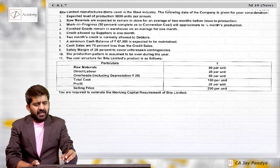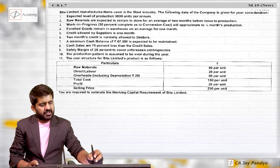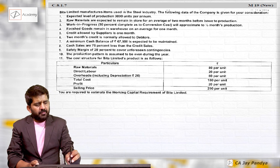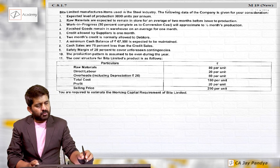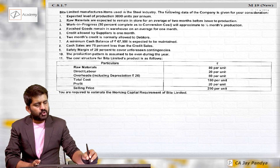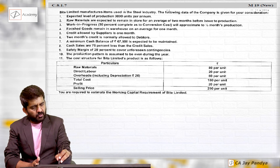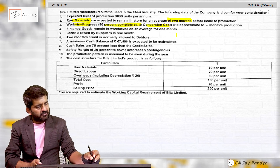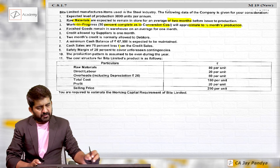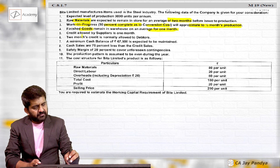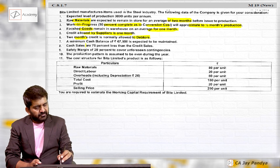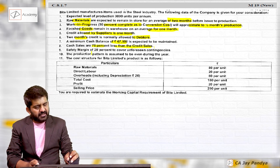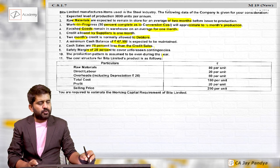Question 8.1.7: Beta Limited manufactures items used in the steel industry. The following data is given for consideration. Raw material - expected level of production is 9,000 units per annum. Raw materials are expected to remain in store for an average of two months before issue to production. Work in progress is 50% completion as to conversion cost, approximately half month's production. Finished goods remain in warehouse for one month. Credit allowed by supplier is one month; two months credit is normally allowed to debtors. A minimum cash balance of ₹67,500 is expected. Cash sales are 70% less than credit sales. Safety margin is 20%. The production pattern is assumed to be even during the year.